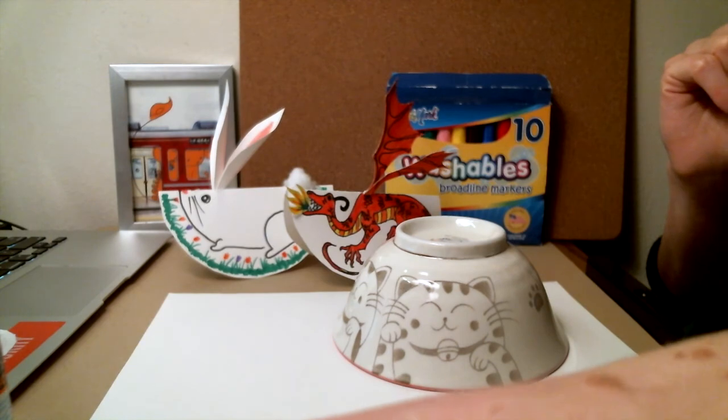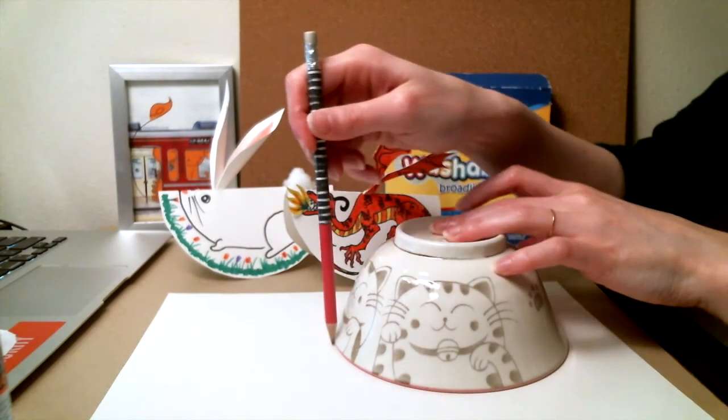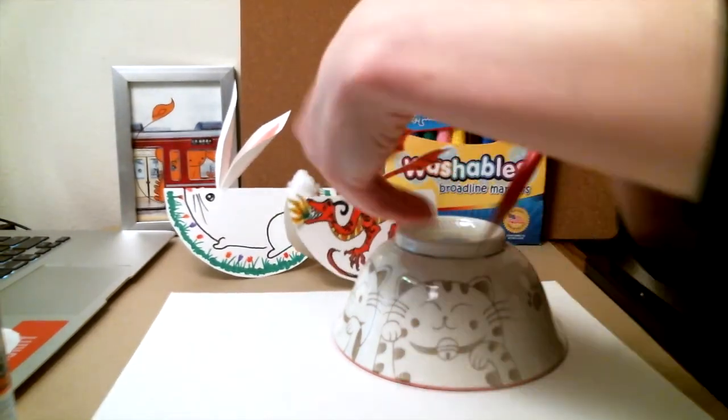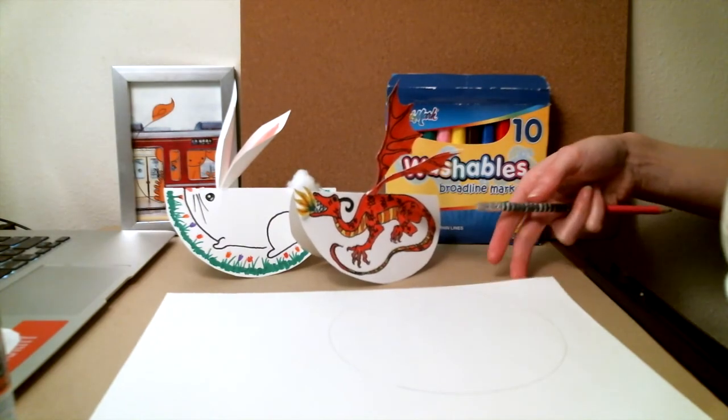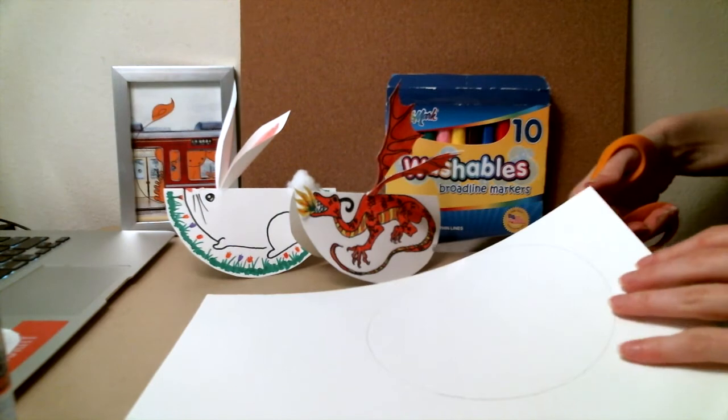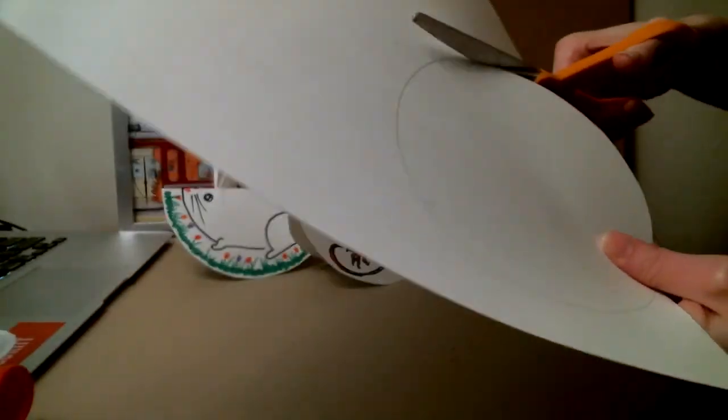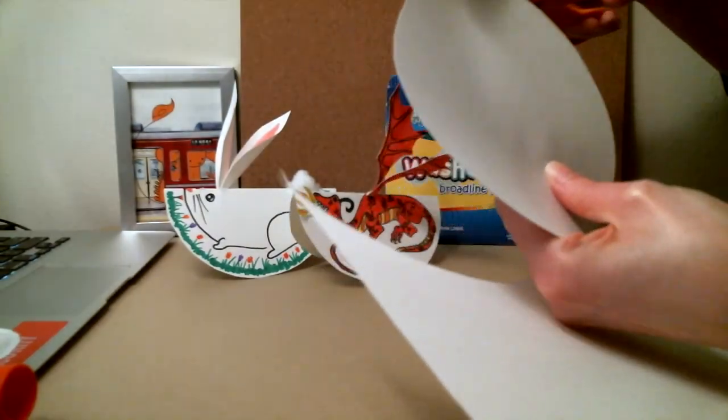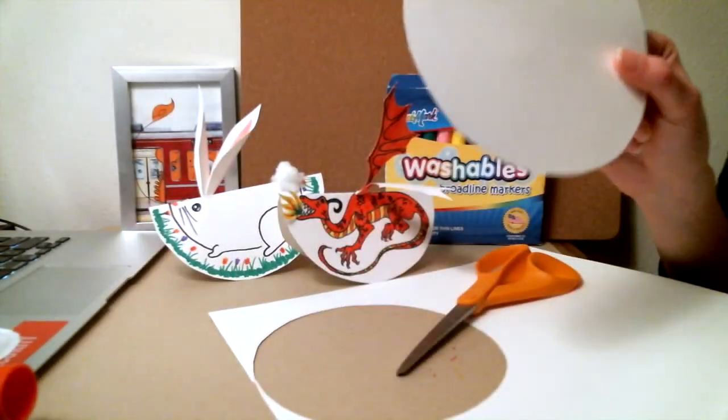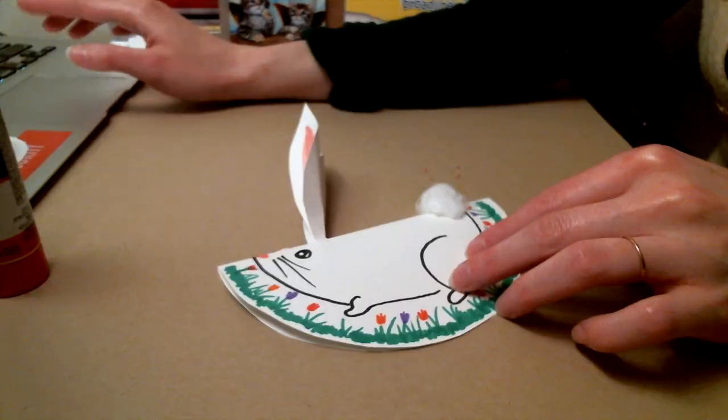Then I took a pencil, traced around the circle, and I needed a pair of scissors to cut out my circle. Here is the circle that I made using my bowl. So you can start this way too. Let's make our springtime rabbit.